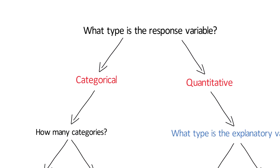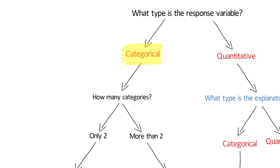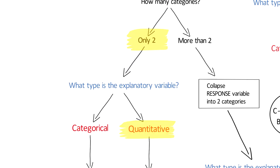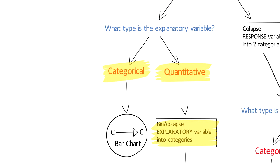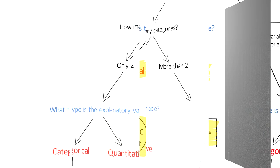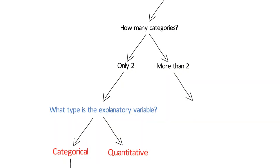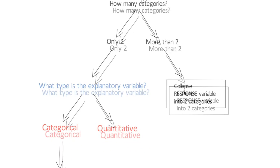Looking at our graphing decisions chart, we can see the steps we have taken to generate a bivariate graph with a categorical response variable that has two categories and a quantitative explanatory variable. We also discussed how to convert the quantitative explanatory variable to a categorical variable, a step which must be taken for the purposes of visualizing the relationship. What decisions need to be made if the response variable has more than two categories? In this case, we would need to collapse response variable categories into two categories. To demonstrate this, we'll need to modify the research question.